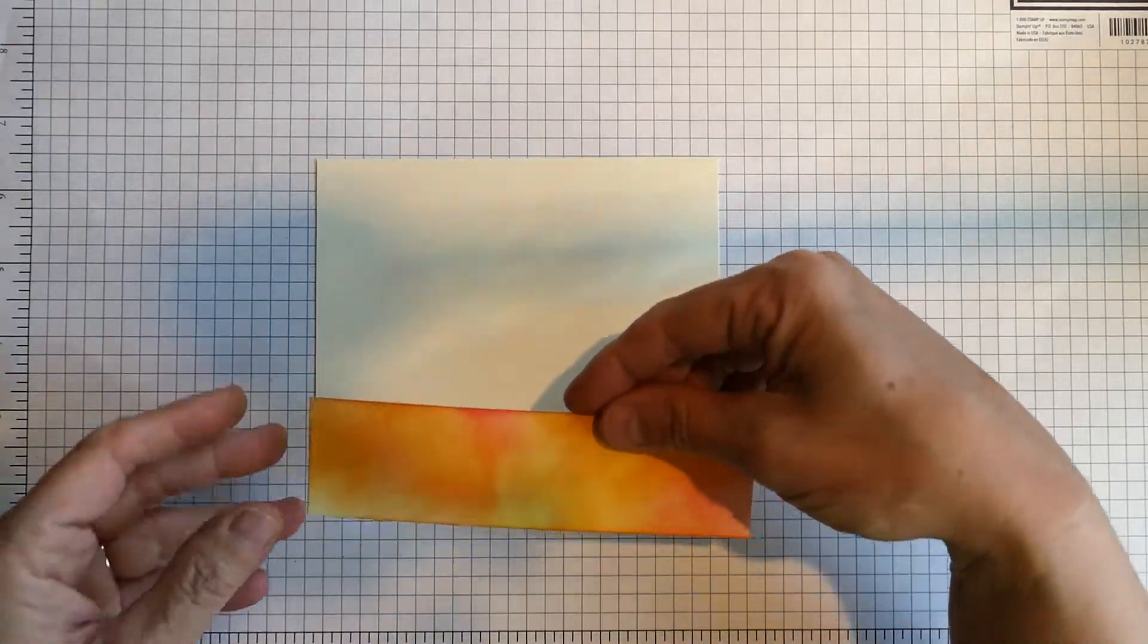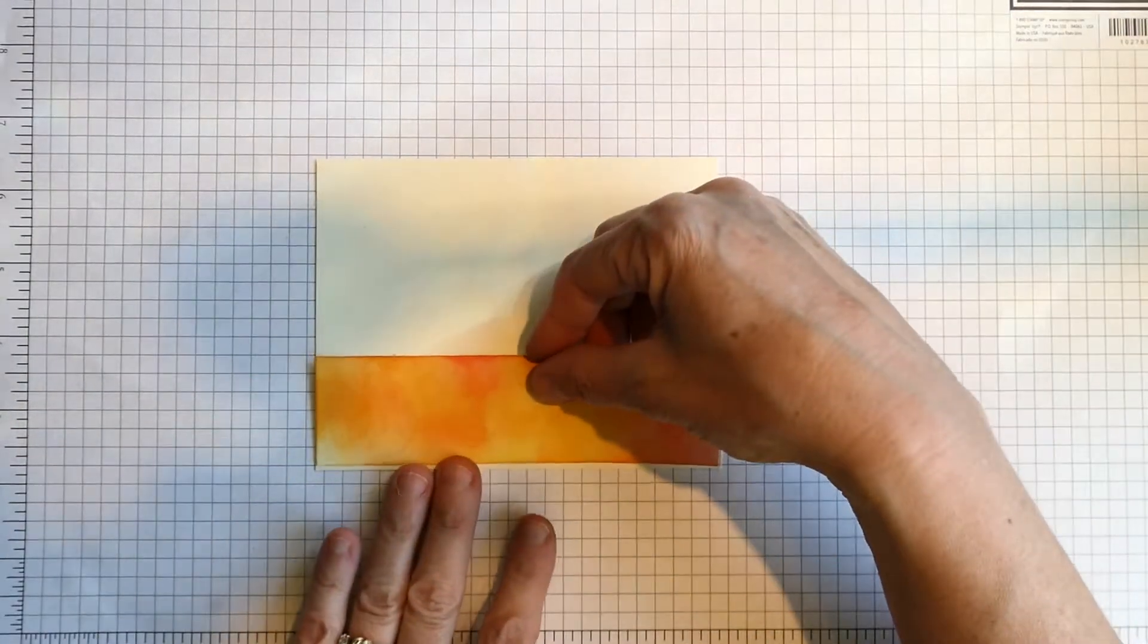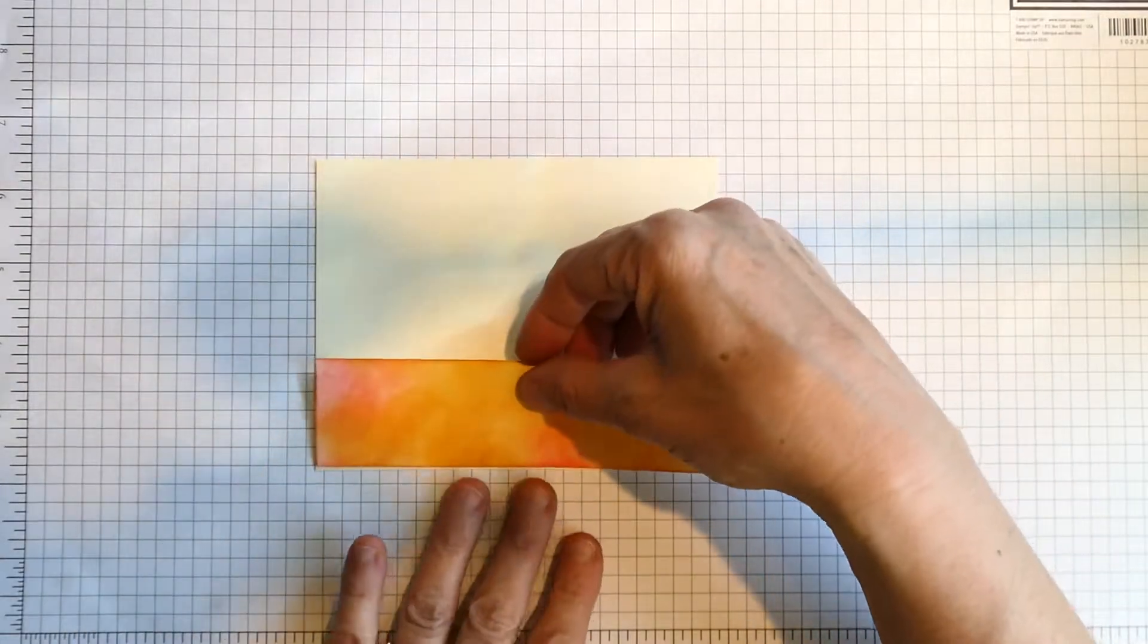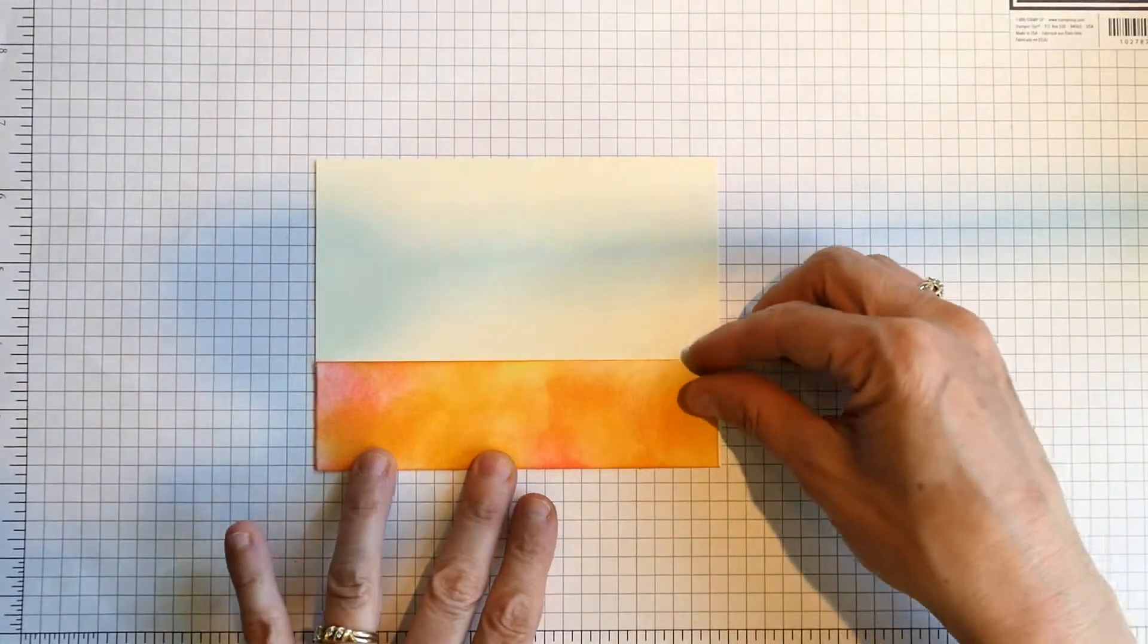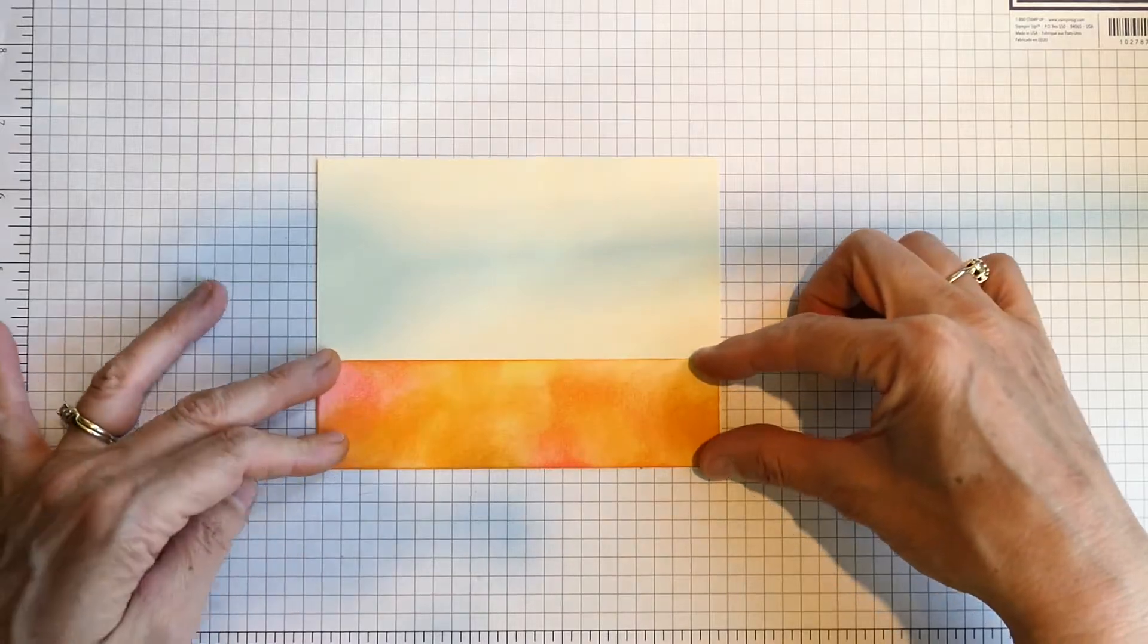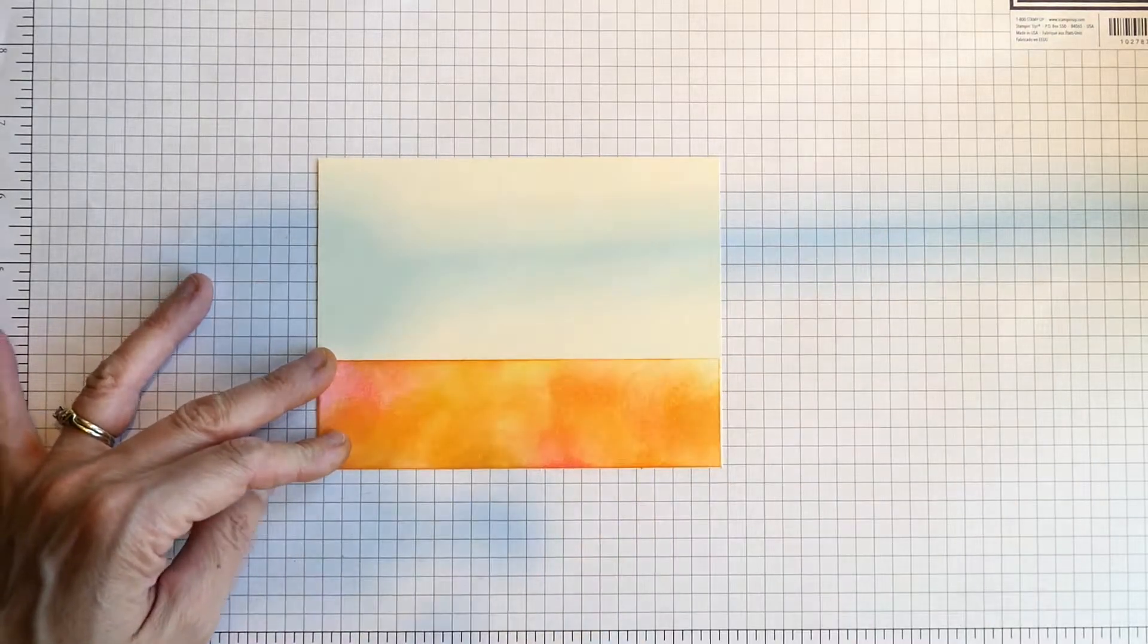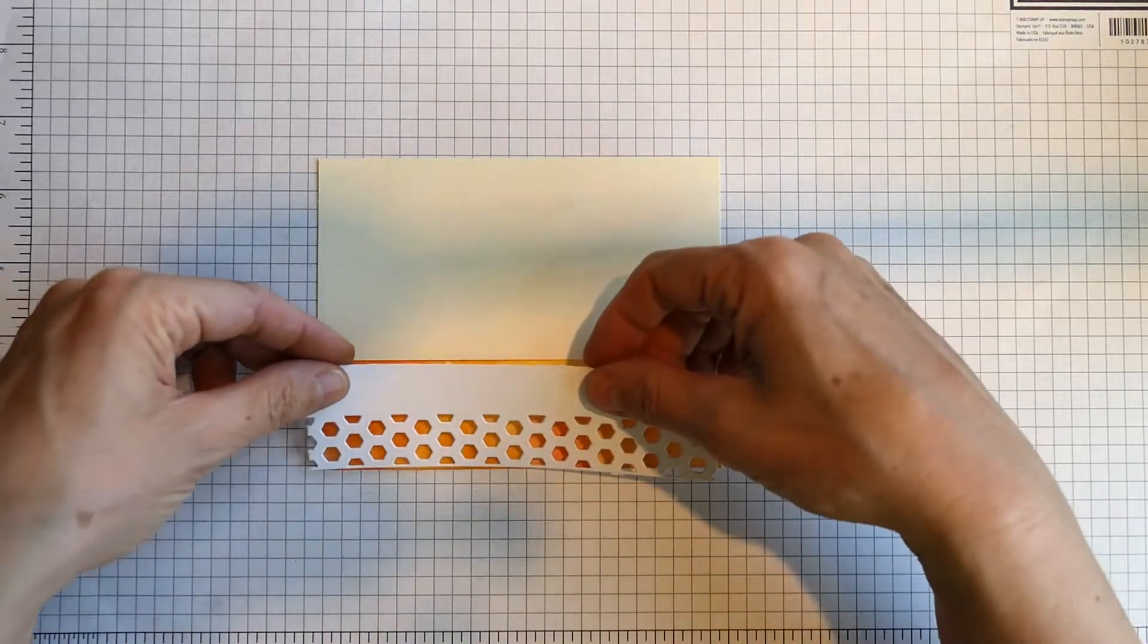Since I'm going to be using some really warm colors, I also used a very rich ivory base for the card. The base for the hexagon layers was a strip of paper that I blended with Distress Inks: worn lipstick, squeezed lemonade, and wild honey.